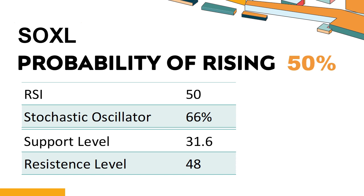Trend Outlook: The probability of SOXL share price rising is 50%. When the probability of rising is higher than 50%, the stock has a higher chance of rising; if lower than 50%, the probability of falling is high. Combining multiple technical analysis indicators, SOXL has three bullish signals and three bearish signals. SOXL's short-term support level is 34; if it falls below 34, it will have a chance to test 31.6.